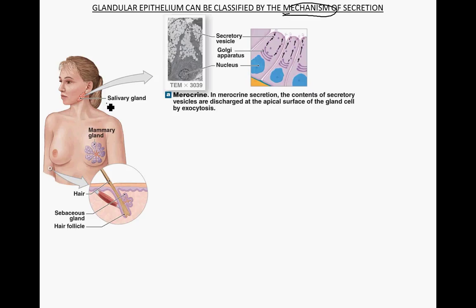Salivary glands are representative of the first kind: merocrine glands. In merocrine secretion, the contents of the secretory vesicles — these little vesicles here — fuse with the cell membrane and the secretion is released out of the cell. The cell stays intact; the secretion just flows out by exocytosis. Saliva and the enzymes in saliva are produced this way.